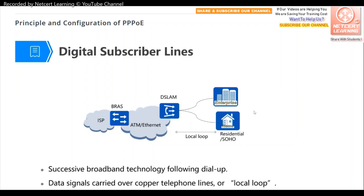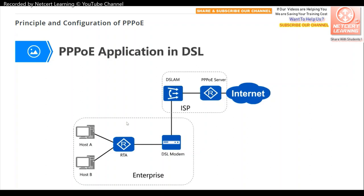In some enterprises or homes, we have telephone lines connected to the ISP. We can use this telephone line and PPPoE technology to connect to the DSLAM. Between the DSLAM and BRAS there is an Ethernet link or ATM link, but most of the time it is Ethernet. The DSLAM transmits our data to the BRAS, which is the device that authenticates and accounts users. In an enterprise, a router, several hosts, and a DSL modem are used for this PPPoE application.